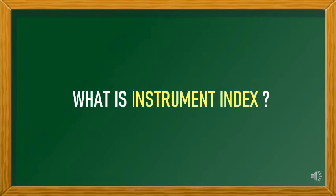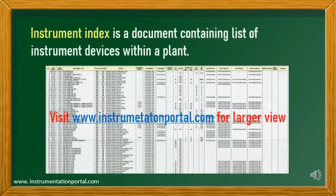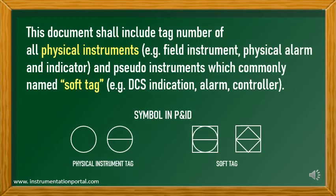What is instrument index? Instrument index is a document containing a list of instrument devices within a plant. This document shall include tag numbers of all physical instruments, for example field instruments, physical alarms, and indicators, and pseudo-instruments which are commonly named soft tags, for example DCS indication, alarm, and controller.